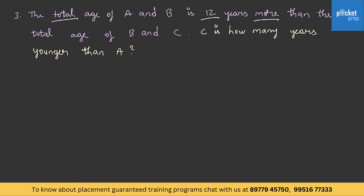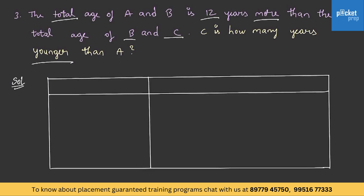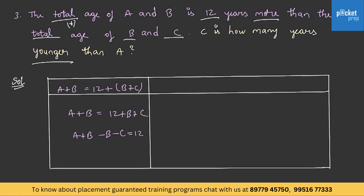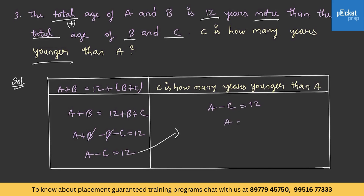The total age of A and B is 12 years more than the total age of B and C. C is how many years younger than A? A plus B equals 12 plus B plus C. Therefore A plus B minus B minus C equals 12, giving A minus C equals 12. This means A is 12 years elder than C, so C is obviously 12 years younger than A.